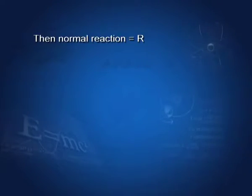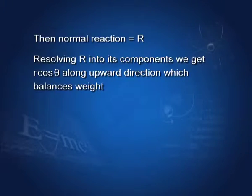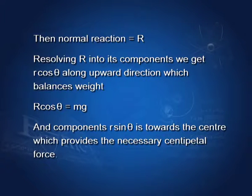The normal reaction offered by the ground to the cyclist is R. This R is inclined at an angle theta with the vertical. Resolving R into its components, we get R cos theta along the upward direction, which balances the weight of the body acting downward. So R cos theta equals Mg. The second component R sin theta is towards the center, which provides the necessary centripetal force. So R sin theta equals Mv² upon R.